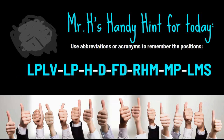I was lucky enough to go to university and complete four qualifications, getting quite a few distinctions. This is how I got through — I used abbreviations or acronyms. For example: LPL — low price, low value — that's the bottom left corner. Then low price, then hybrid, then differentiation, then focus differentiation, then risky high margins, then monopoly pricing at the bottom right corner, and finally loss of market share. That's the eight. You can also color code every second one. The 9 o'clock position is low price, 12 o'clock is differentiation, 3 o'clock is risky high margins, and 6 o'clock is loss of market share.